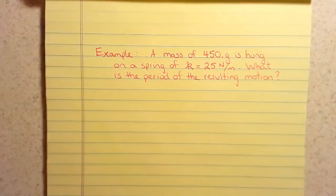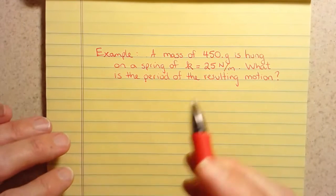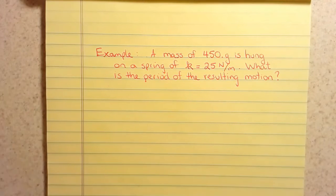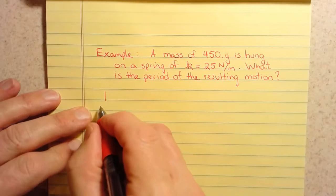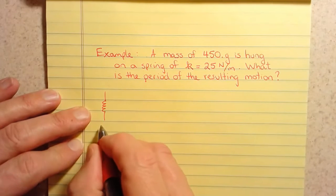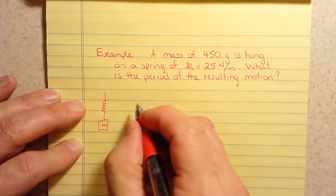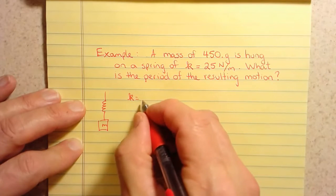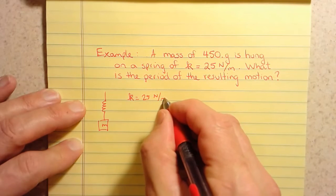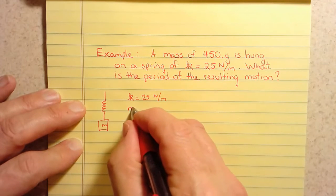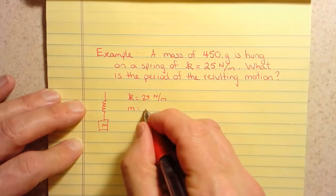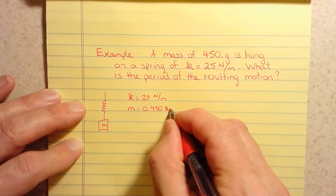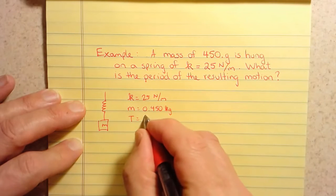Suppose I have 450 grams of matter, and it's hung on the end of a spring, and the spring constant is 25 newtons per meter. I want to know, what is the period of the motion that results? So let's just draw a little diagram. Here's my spring. Here's my mass. I happen to know the spring constant. So k equals 25 newtons per meter. The mass is 450 grams. That's going to be 0.450 kilograms. And I'm trying to find the period, which I don't know.